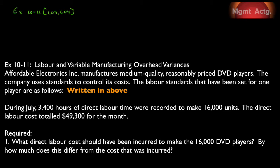We are now going to do exercise 10-11, covering learning objectives 3 and 4: labor and variable manufacturing overhead variances. Affordable Electronics manufactures medium quality, reasonably priced DVD players. The company uses standards to control its costs. We have standards for direct labor — quantity, price, and quantity times price.